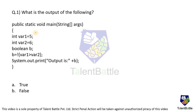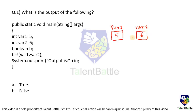Looking at the output of this code: variable1 is declared as an integer with value 5, and variable2 has value 6. So var1 and var2 are integer type variables with values 5 and 6. One more boolean type variable is there, so when the data type is boolean we can expect two types of values — either true or false.